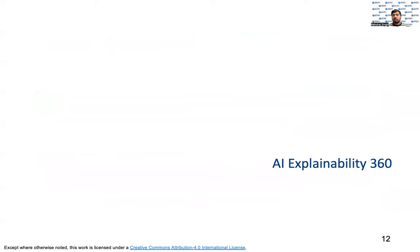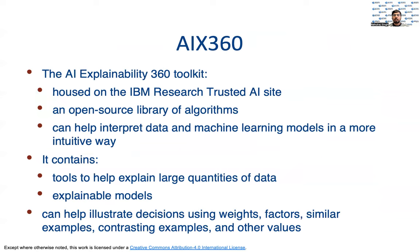Let us now look at explainability through the AI Explainability 360 framework. The AI Explainability 360 toolkit is an open source library of algorithms that allow interpretation and implementation of data and machine learning algorithms in an intuitive way, and is hosted on IBM Research's trusted AI repository. It contains tools to help explain large quantities of data and explainable models that can help illustrate decisions using weights, factors, similar examples, contrasting examples, and other values.